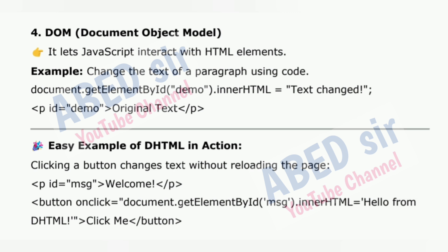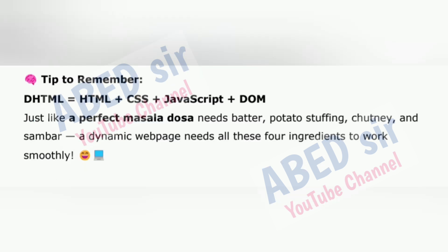Easy example of DHTML in action: clicking a button changes text without reloading the page. &lt;p id='msg'&gt;Welcome&lt;/p&gt; and a button onclick sets document.getElementById('msg').innerHTML to 'Hello from DHTML'. Tip to remember: DHTML = HTML + CSS + JavaScript + DOM — just like a perfect masala dosa needs batter, potato stuffing, chutney and sambhar, a dynamic web page needs all four ingredients to work smoothly.